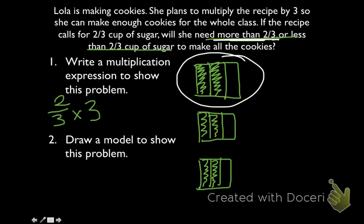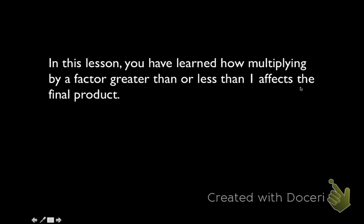Another way to look at that is to think of scaling again. When we have a fraction — 2 thirds — multiplied by a whole number greater than 1, our final product is going to be that many times bigger than our original. If our original is 2 thirds and our whole number is 3, our final product is going to be 3 times as big. In this lesson, you have learned how multiplying by a factor greater than or less than 1 affects the final product.